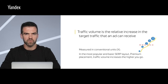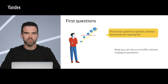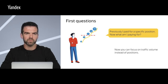In general, a value of 100 is the traffic volume that an ad has when it is in the top position in our most popular and basic SERP layout, which is premium placement. From there, the traffic volume decreases from top to bottom. Let's look at the main questions that advertisers usually ask. Question one: before, I knew that I was paying for a specific position, but now what am I paying for?